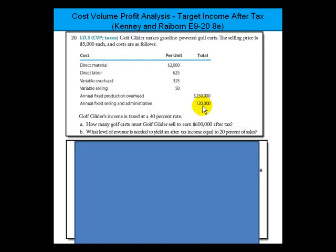The tax rate is 40%. Part A asks: how many golf carts must Golf Glider sell to earn $600,000 after tax?